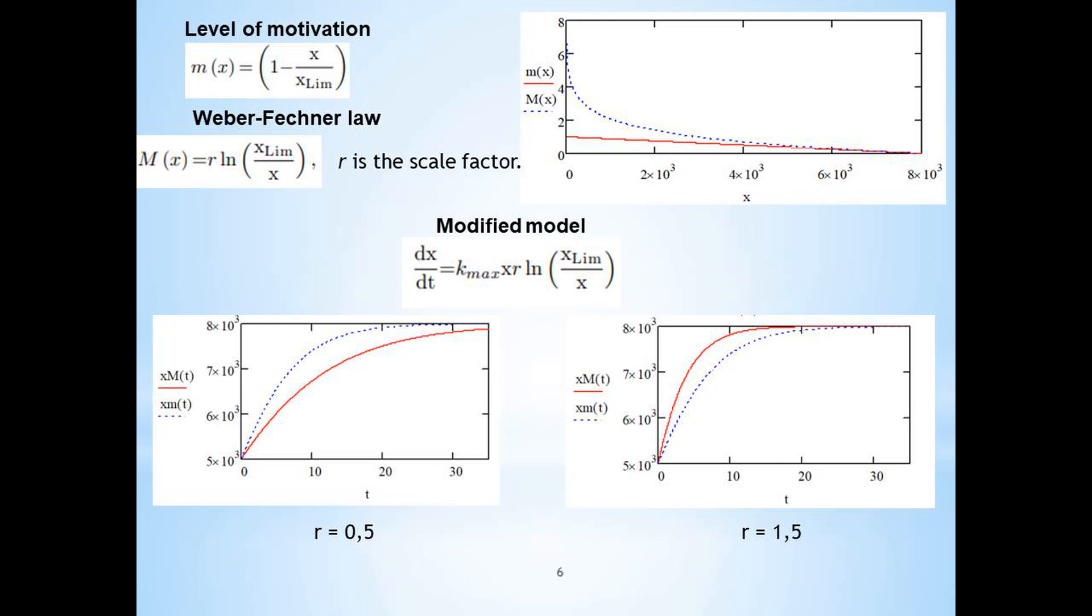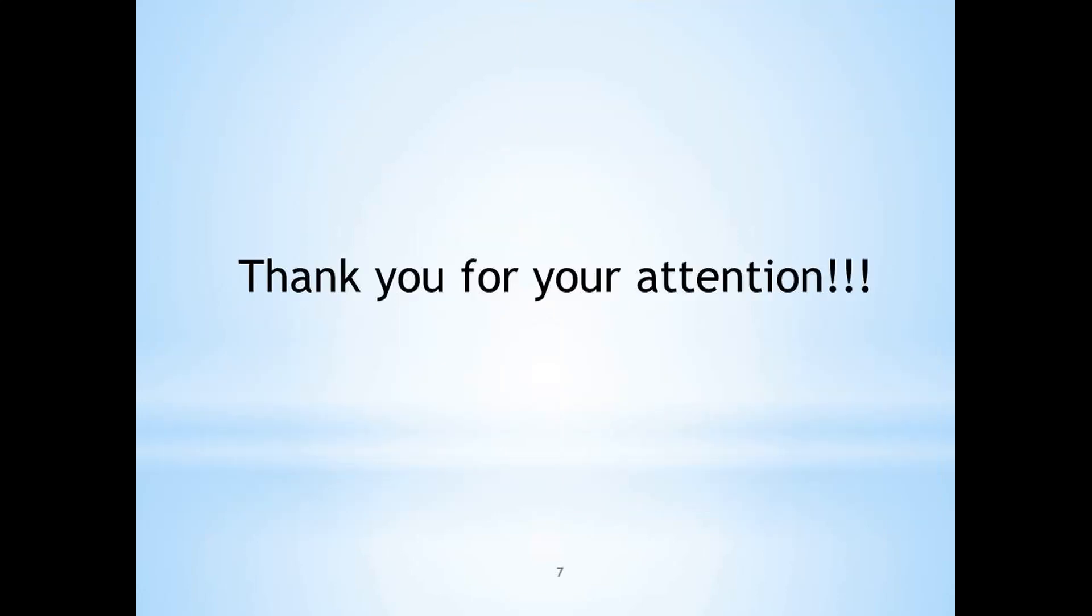Given the content and form of the Weber-Fechner motivation function, the original model can be modified. Comparing the dynamics of the original and modified models for different values of the scale factor, it is obvious that, depending on the individual characteristics of the socio-economic system, the process of sustainable development can proceed less or more intensively. It should be noted that the fatigue point can also be identified in the modified model. The results obtained can be explained by the presence of institutional features of socio-economic systems. Thank you for your attention.